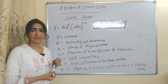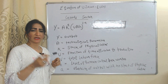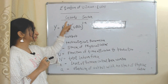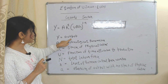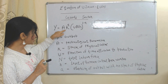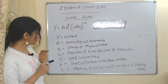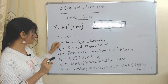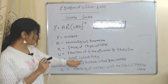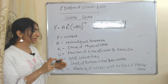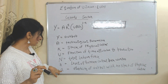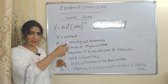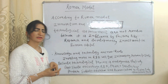For the goods sector equation in the Uzawa-Lucas model: Y represents output, A is the technological parameter, K is physical capital stock, u is the fraction of time allocated to production, and another parameter represents the total labor force at the present level of human capital per worker. The elasticity parameter represents how much output changes when physical capital changes.